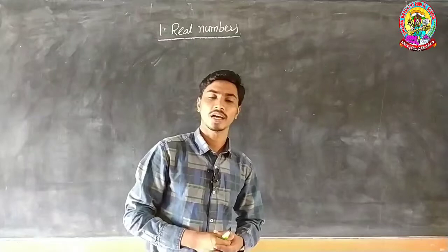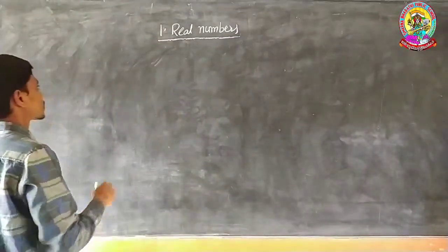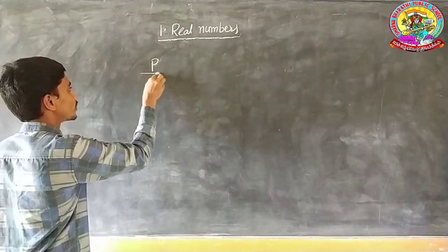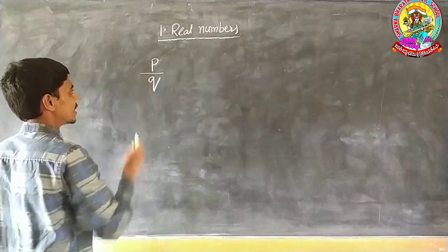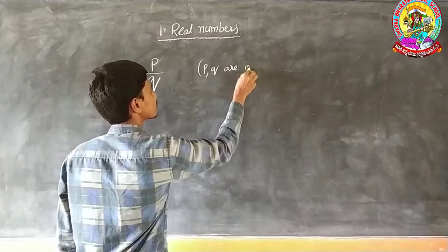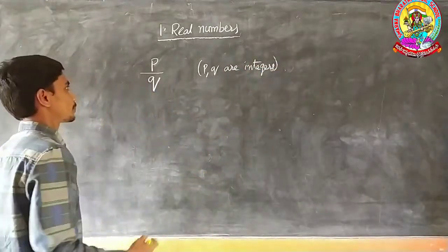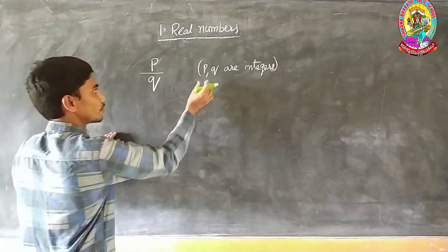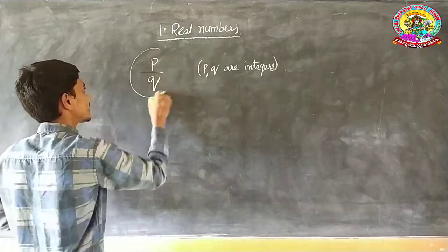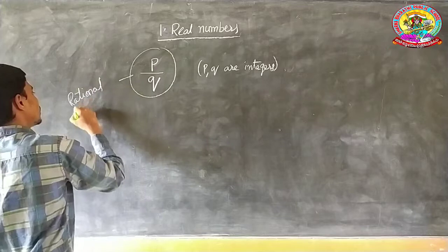Before going to the lesson I will explain the basics. What is meant by a rational number? A number which can be expressed in the form of P by Q, where P and Q are integers, is called a rational number. If P and Q are integers, then P by Q is a rational number.